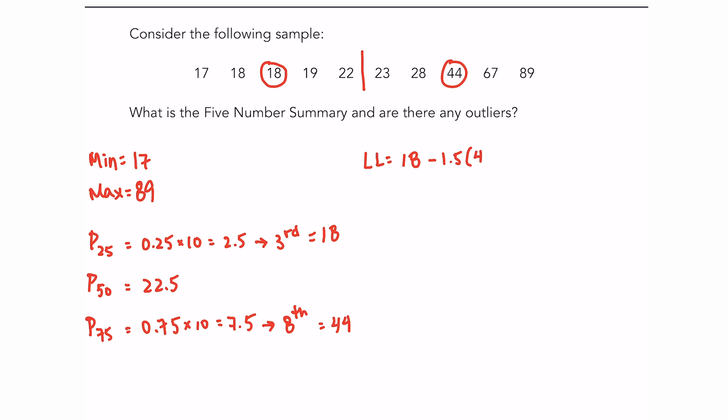So the lower limit is negative 21. Now of course there are no values in my sample that are below negative 21, so I have no outliers on the lower end.